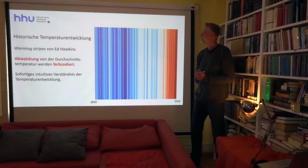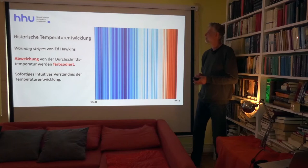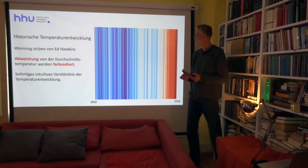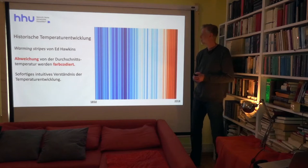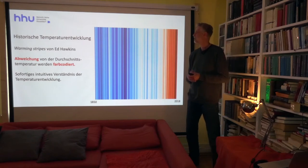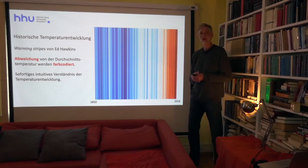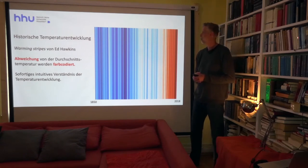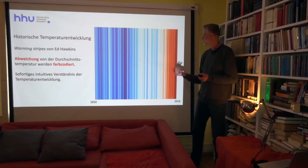Das ist ein Diagramm, was Ed Hawkins entwickelt hat. Hier sind die Abweichungen von der Durchschnittstemperatur dargestellt: Die Durchschnittstemperatur zwischen 1940 und 1980 als Null ergibt weiße Streifen. Alles, was kälter ist, ist blau – je kälter, desto dunkelblauer – und je wärmer, also je höher die positive Abweichung, desto röter. Diese Warming Stripes sind mittlerweile sehr bekannt. Man kann sie im Internet für praktisch jeden Ort der Erde herunterladen, und es ist sofort intuitiv sichtbar, wie sich die Temperatur in einem bestimmten Bereich geändert hat.